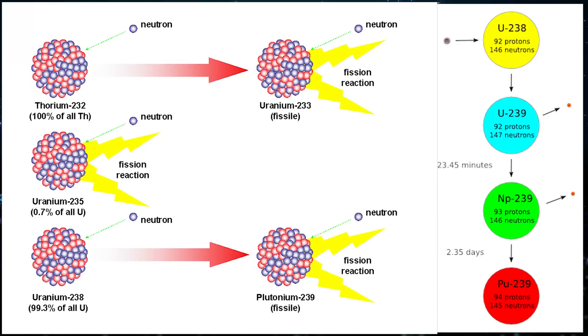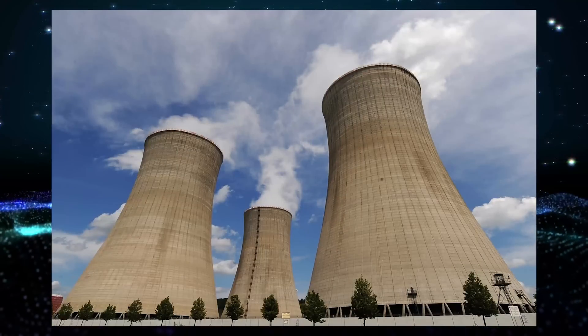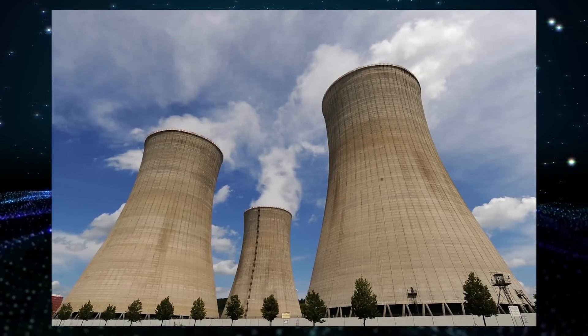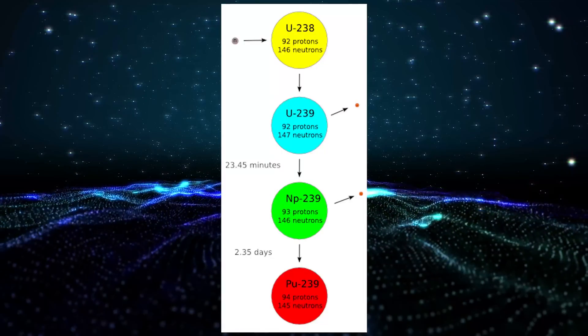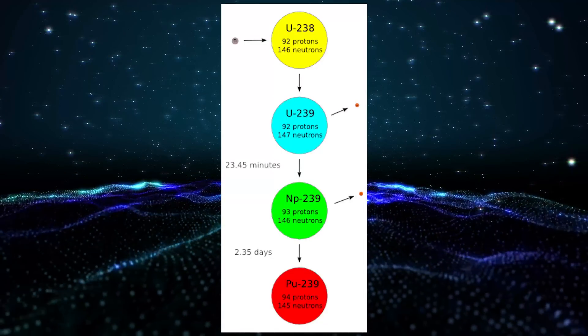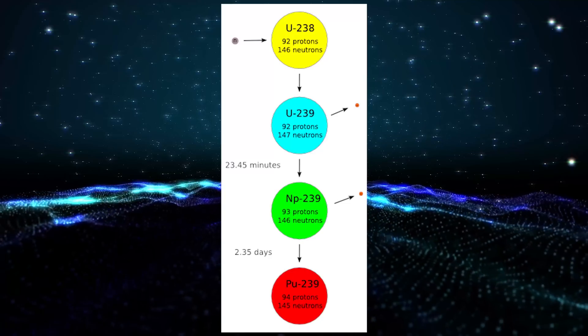But if uranium-238 gets hit by a neutron, after a few days it will have decayed into plutonium and will be ready to split and produce energy. Today's reactors don't have enough free neutrons flying around to transform uranium-238 into plutonium, so it ends up being exported as nuclear waste as it is replaced by new uranium-235.